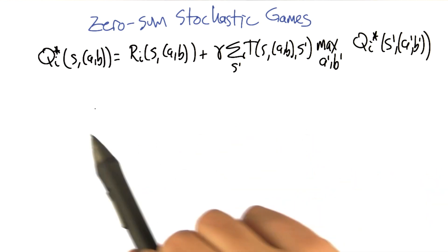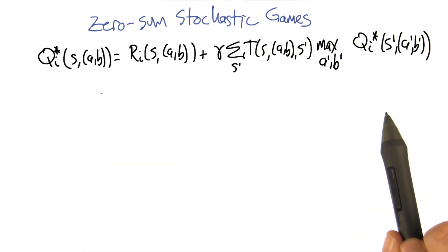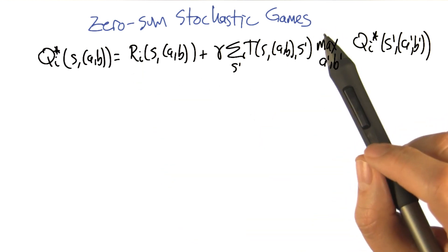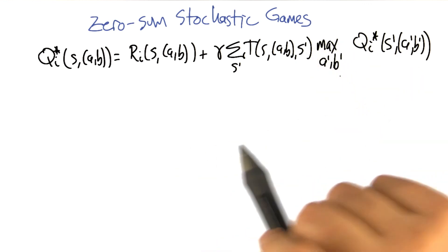So what I've got here is actually the Bellman equation. And let's look at this together and see if we can fix it, because it's not quite right for dealing with the idea of zero-sum stochastic games. So you remember the Bellman equation?